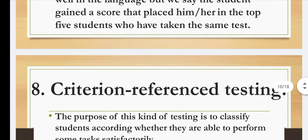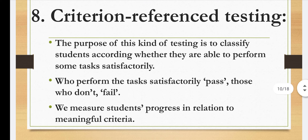Next is criteria reference testing. Here we simply set a criteria — for example, 33%: below 33% is fail, above is pass. The purpose of this kind of testing is to classify students according to whether they are able to perform some tasks satisfactorily. Those who perform the tasks satisfactorily pass; those who don't, fail. We measure the student's progress in relation to meaningful criteria.